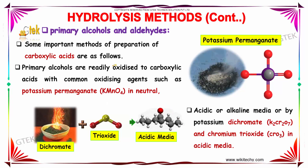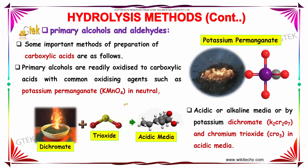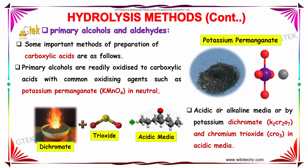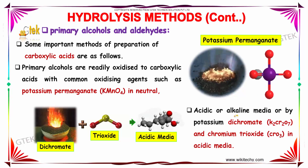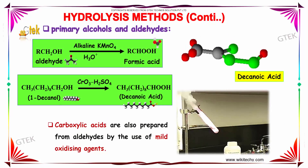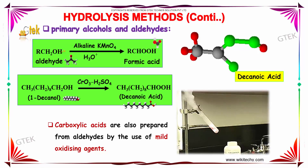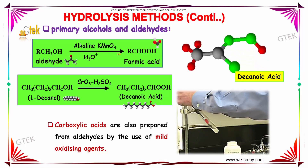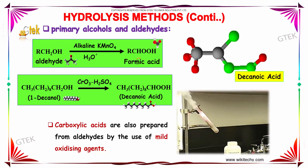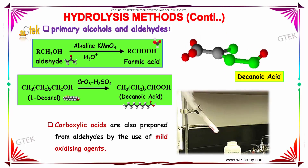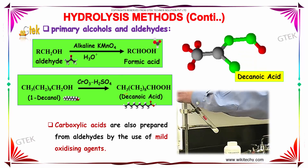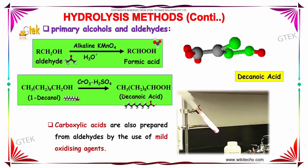Some important methods of preparation of carboxylic acids are as follows. Primary alcohols are readily oxidized to carboxylic acids with common oxidizing agents such as potassium permanganate in neutral, acetic, or alkaline media, or potassium dichromate and chromium trioxide in acidic media. Aldehydes, when made to undergo reaction with alkaline KMnO4 in an acidic medium (in presence of H3O+ ions), form carboxylic acids. When 1-decanol is made to undergo reaction in the presence of CrO3 and H2SO4, we obtain decanoic acid. Carboxylic acids are also prepared from aldehydes by the use of mild oxidizing agents.